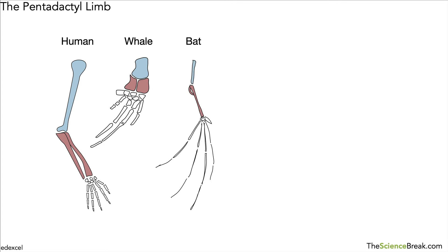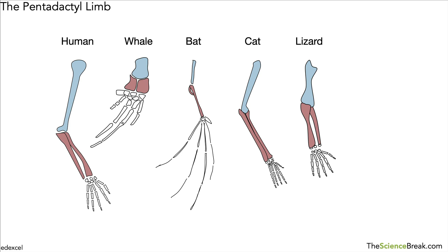If we look at another living thing — this is a bat — again the same bones but arranged and structured slightly differently to allow the bat to fly. Same bones, different structure, very different job. In a cat, a lizard, and a frog, again the same bones appear with slightly different shapes, but you can see that the basic structure is the same, allowing each to use its limbs in a slightly different way.